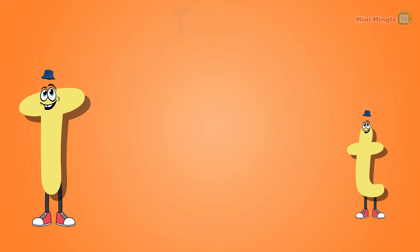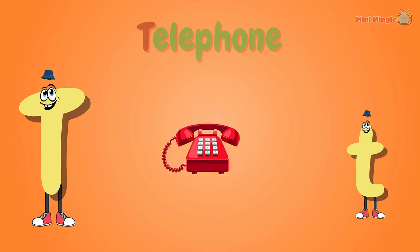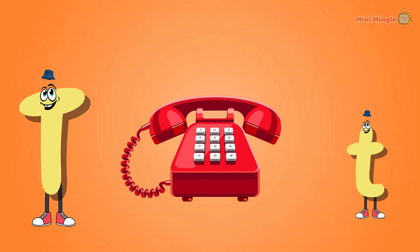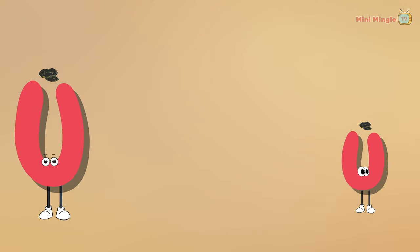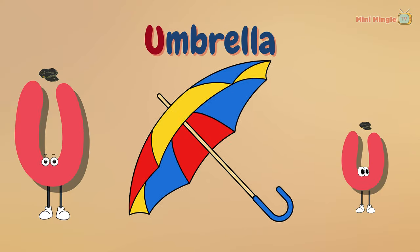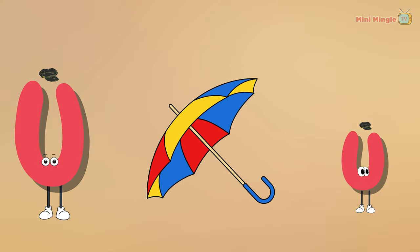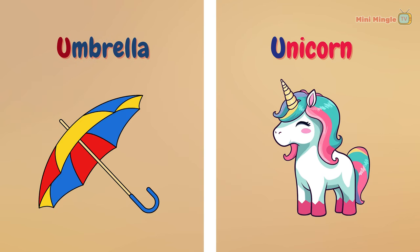T for tiger. T for telephone. Tiger and telephone. U for umbrella. U for unicorn. Umbrella and unicorn.